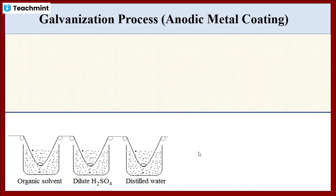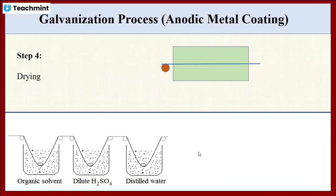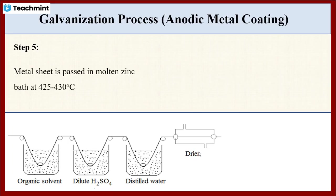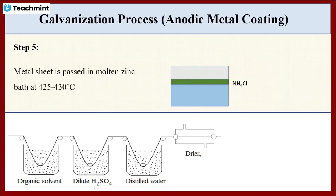In the fourth step, the metal steel is dried using a dryer. In the fifth step, the dried metal steel is passed into a molten zinc bath at 425 to 430 degrees Celsius. If the zinc is directly exposed to air, it will undergo oxidation and form zinc oxide, so to avoid this, a flux of ammonium chloride is placed over the zinc bath.